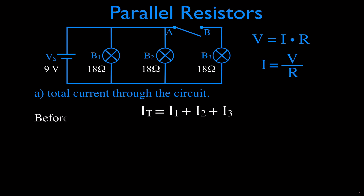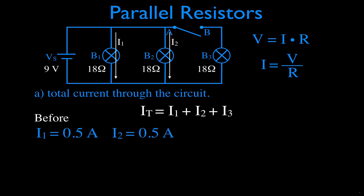We can calculate the current through each branch before we close the switch. From branch one, the current is 0.5 amperes because the voltage across that bulb is 9 volts — it's in parallel with the voltage source — divided by 18 ohms: 9 divided by 18 is 0.5 amperes. Likewise, bulb two also has 0.5 amperes. The third bulb has no current because the switch is open, so the total current is 1 ampere.